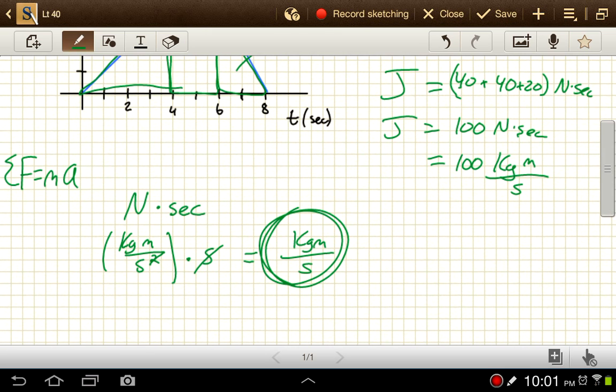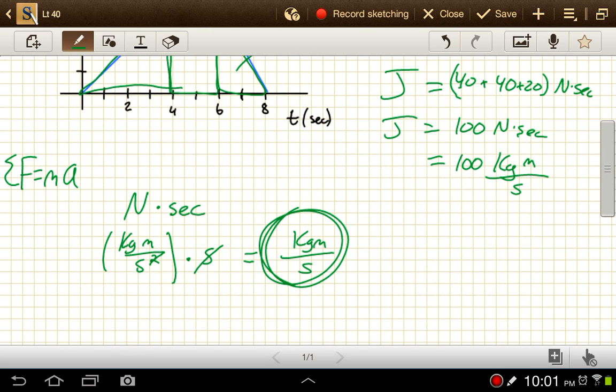So, I might write this as 100 kilogram meters per second. Now, from here, I might be given information about the mass of the object, and a starting velocity, and ask to find the final velocity, and that's what we did in the previous problem.